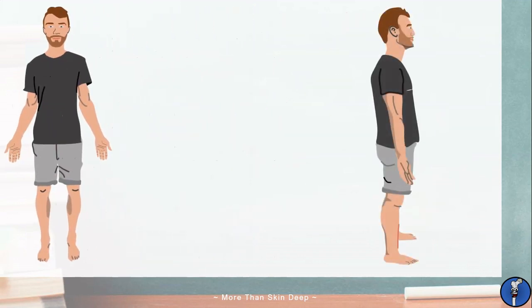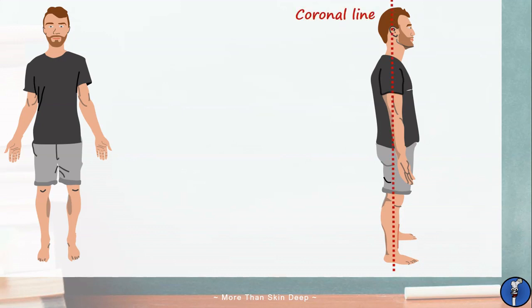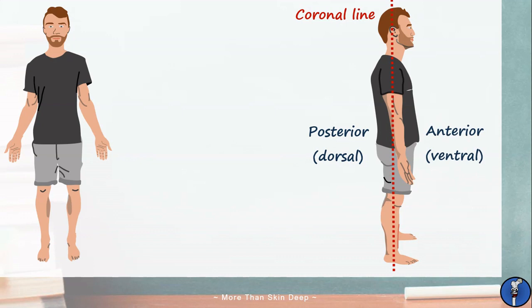Next, we'll take a look at Greg from the side. This time, we'll draw a line down his side to divide him into a front and back half. This is known as the coronal line. Anything behind this line is referred to as a posterior or dorsal structure, and anything in front of it is an anterior or ventral structure. Again, we can use these terms to describe how structures are related to one another. Anything that is more towards the front can be described as anterior to the thing in question.